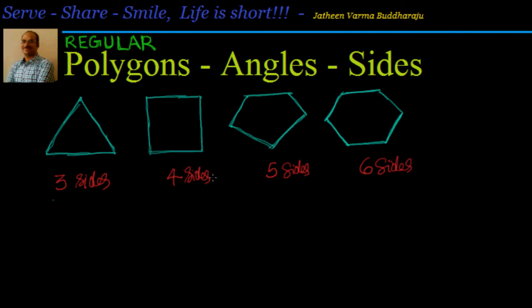We have 3 sides, 4 sides, 5 sides, and 6 sides. A polygon is a simple closed curve made with line segments that don't meet each other except at the endpoints, which are the vertices. These are all regular polygons, meaning all the sides are equal — and automatically all the interior angles will also be equal.